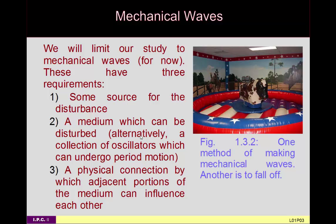Alternatively, you can treat this medium as a collection of oscillators which undergo periodic motion together — they've got to be coupled together. So if each stripe on this arena is a large oscillator, this oscillator has to be connected to the next such that when one is up, adjacent ones need to be reasonably close to up as well. They can't be at a maximum down at the same time. That is our third criterion: there's some physical connection between adjacent portions of the medium which influence each other.